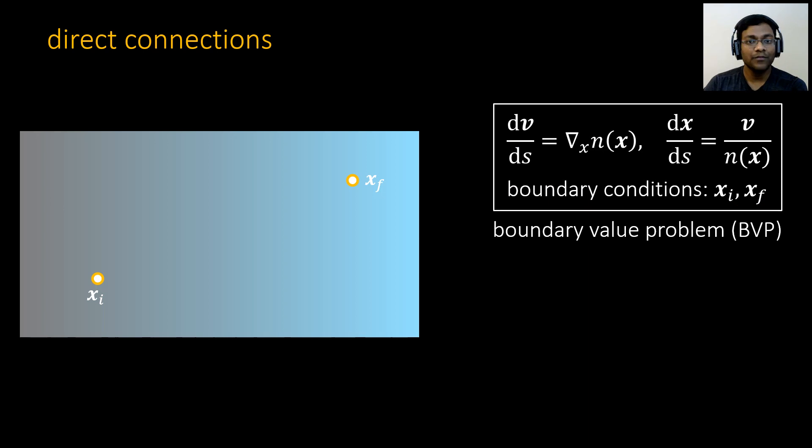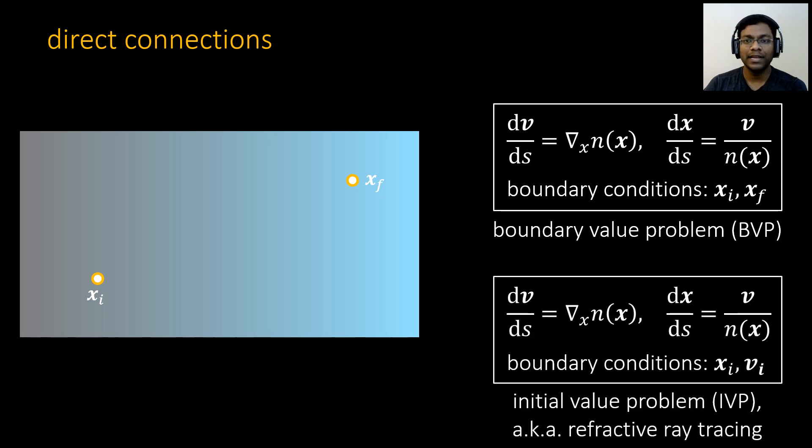So, we need to find a curve that passes through initial position xi and final position xf and satisfies the differential equations. This is known as a boundary value problem in the literature. We know how to solve a similar problem, namely, given initial position xi and initial velocity vi, compute the curve for any distance. This is known as the initial value problem, or refractive ray tracing, in the literature. We use numerical integration to solve this.